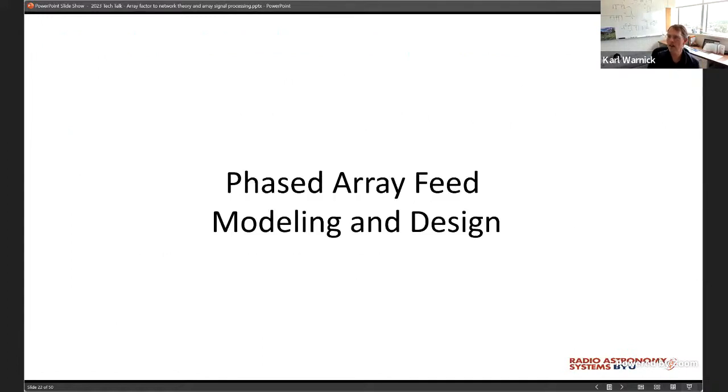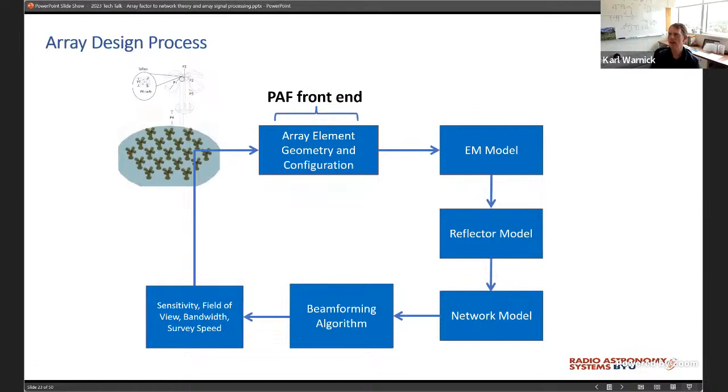A little bit on the details of how we do this third approach, where we use numerical modeling to model the array. Here's an example. Let's suppose I want to design a phased array feed. That's a phased array that works with the dish. I have to model the phased array feed front end. That's the phased array itself. Then I combine that with the reflector. Then I use circuit theory or network theory to add the electronics that connect to the array. I have to model the digital beam forming all in software. From that, I calculate figures of merit. Is the array sensitive enough? Is the SNR good enough? And so on. And then I iterate around that loop using optimization software until I get the right phased array design.